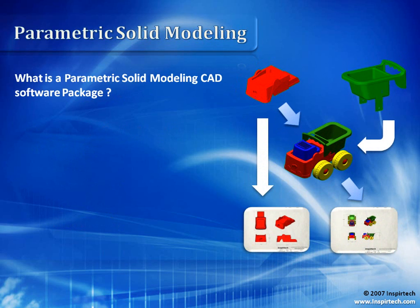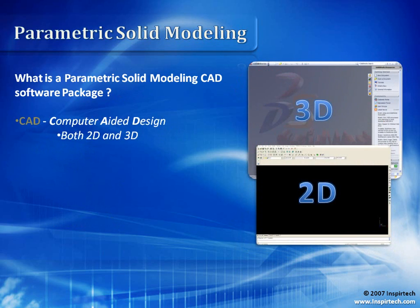So what is a parametric solid modeling CAD software package? Well, first let's look at the word CAD — CAD is an acronym for computer-aided design. CAD software packages come in both two-dimensional and three-dimensional. In our case, SOLIDWORKS is a three-dimensional CAD package.